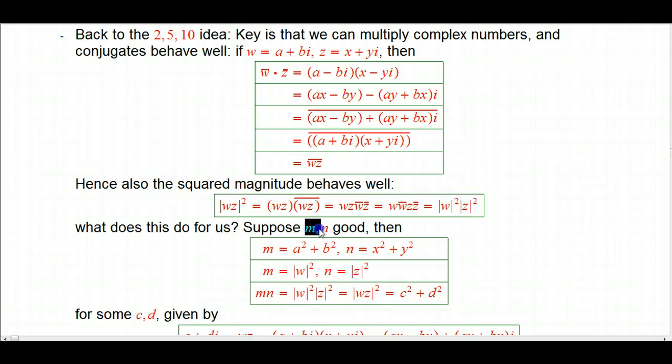But what's the payoff? It's very direct. Suppose that M and N are good, that is they're ordinary integers that can be expressed as the sum of squares. Well we now think of that as saying that M is the squared magnitude of W, where that's A plus BI. N is the squared magnitude of Z. When I take the product of M and N, I'm taking the product of 2 squared magnitudes. That's the squared magnitude of a product. That's the sum of squares of 2 other numbers.